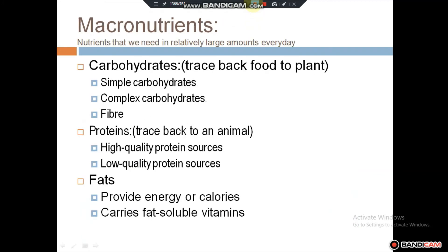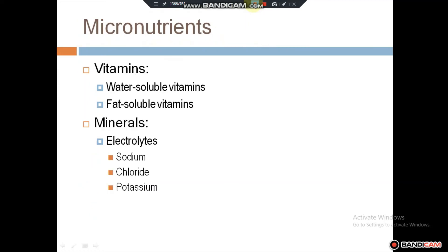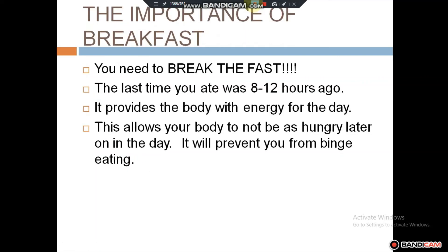Macronutrients are nutrients we need in relatively large amounts, such as carbohydrates, proteins, and fats. Micronutrients are nutrients your body requires in small amounts, such as vitamins and minerals.